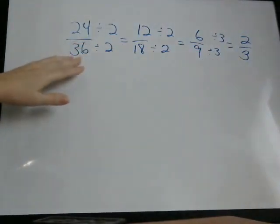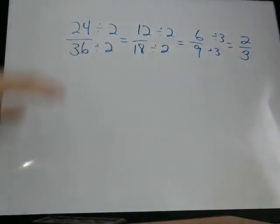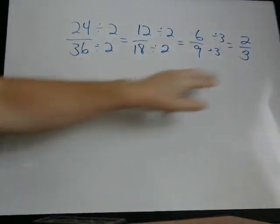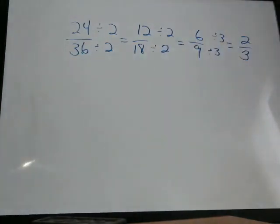This fraction and this fraction, 24 over 36, are the same. They're essentially the same fraction, it's just that this is in lowest terms. So if your answer came out like this, but this was the answer on the test, then you got the right answer. You just need to put this in lowest terms.